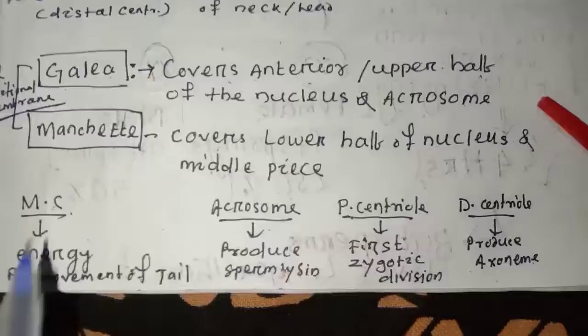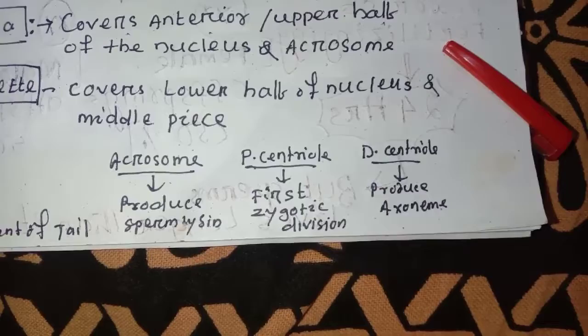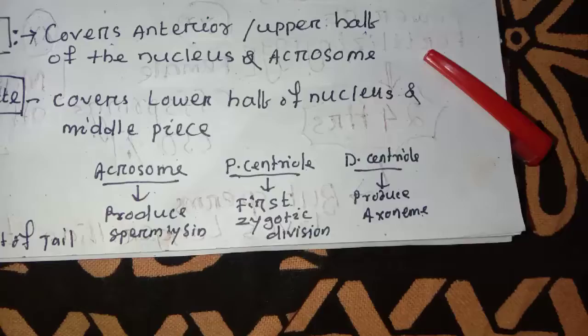The acrosome secretes enzymes. Sperm lysin is released from the acrosome. Sperm lysin helps in fertilization by dissolving and degenerating the membrane, so that the sperm can enter into the egg and produce the zygote.